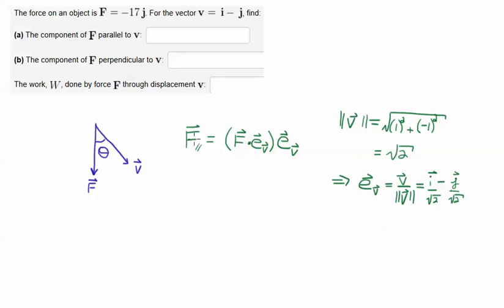This is a scalar, so this will give us the magnitude of this vector, essentially. And then it's going to be multiplied by the unit vector in the V direction.